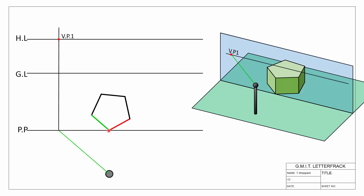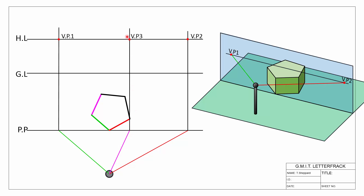For direction number two, now shown in red, we do exactly the same thing: from our spectator we look parallel to it, where that crosses the picture plane projected up, locating our second vanishing point. So VP2 is shown in our 3D view as well. Here we have our third direction in pink — we look parallel to it onto the picture plane, projected up onto our horizon line, giving us VP3. Same thing with our fourth direction in yellow: parallel to it, projected up, and we have VP4.